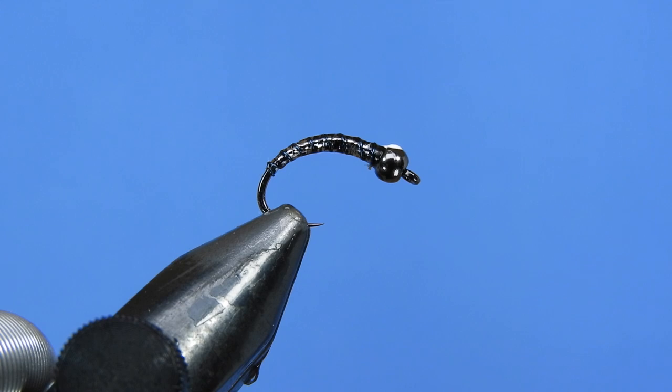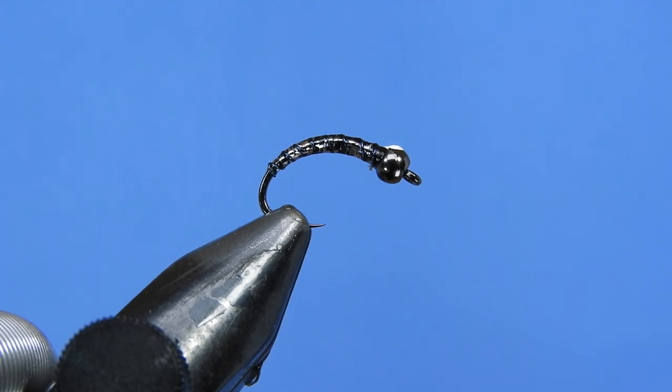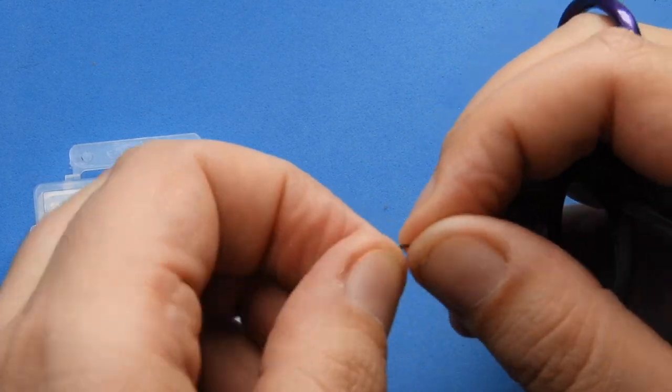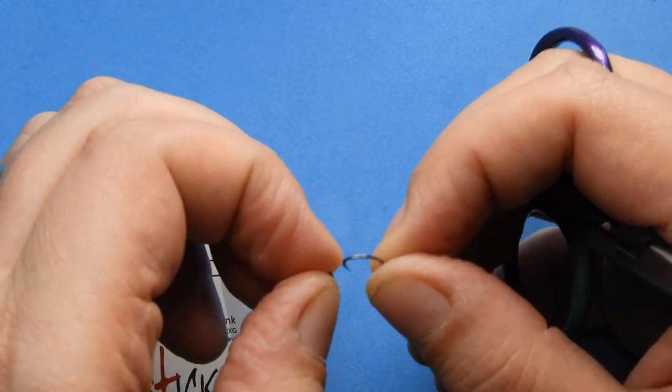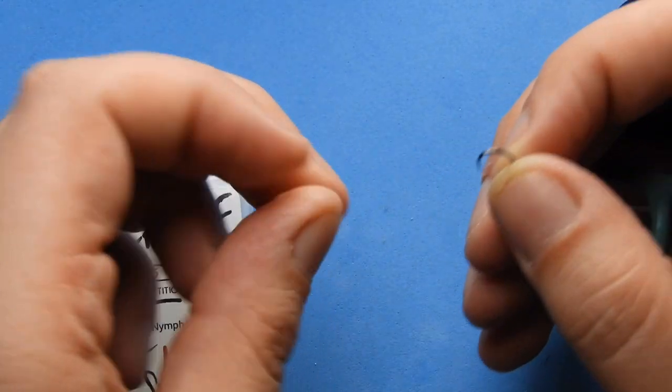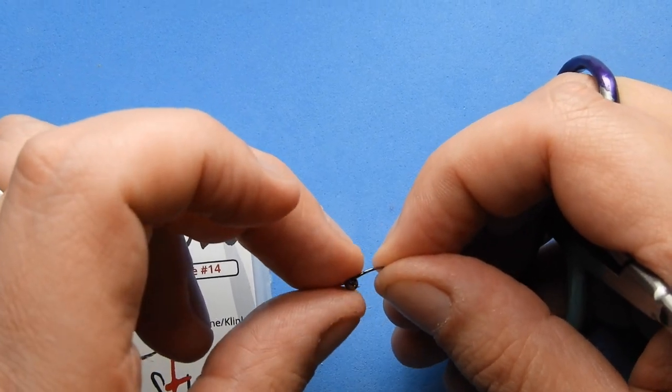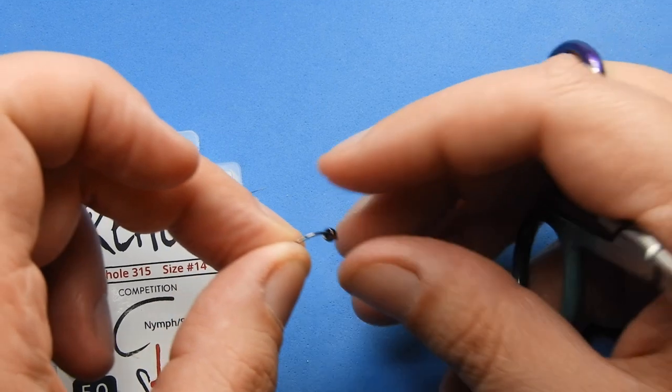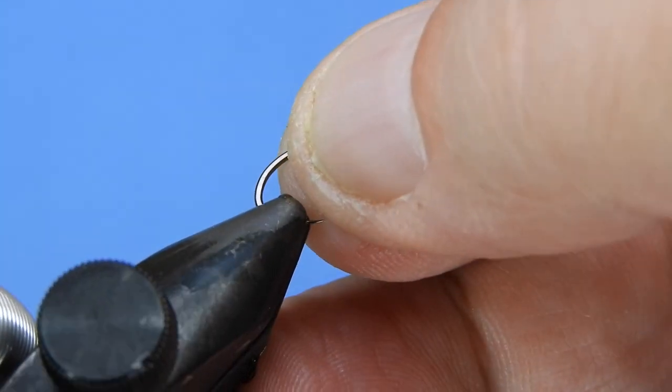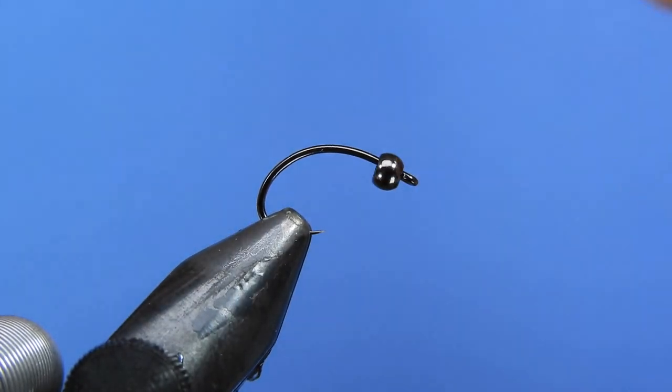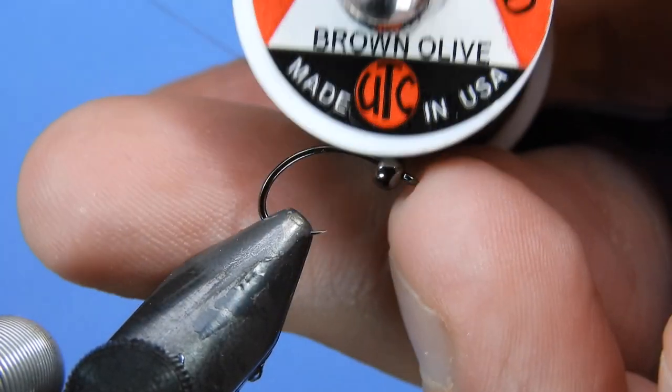All right, let's get a hook prepared and into the vise. So for this fly today we're going to be using a Fire Hole 315 and I've got a tungsten bead with a black nickel finish. Just slide that onto the hook, get that into the vise. Basically any scud hook will work here.